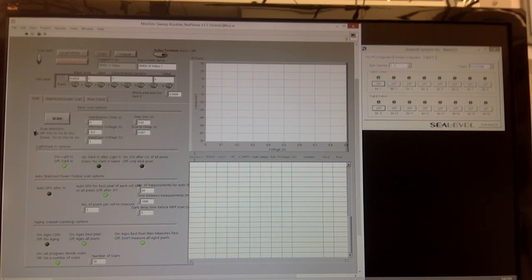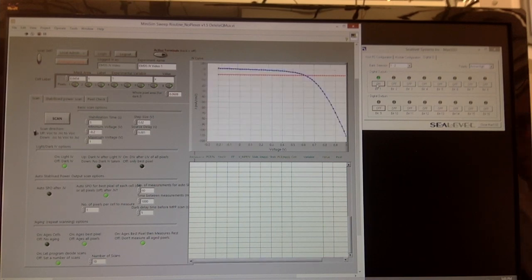Once settings have been entered, we'll press the scan button. We should see two curves appear on the screen. One for the forward voltage sweep and one for the reverse. We will only use data from the forward sweep in the PV module.